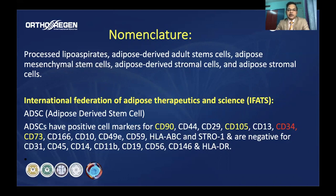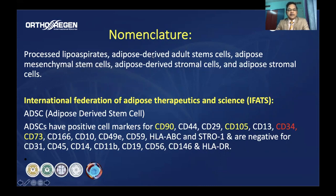This terminology was also starting to be misused to some extent. In the literature on regenerative treatment, we come across all kinds of terms — processed lipoaspirate, adipose-derived adult stem cells, adipose-derived mesenchymal stem cells, or stromal cells — creating considerable confusion.